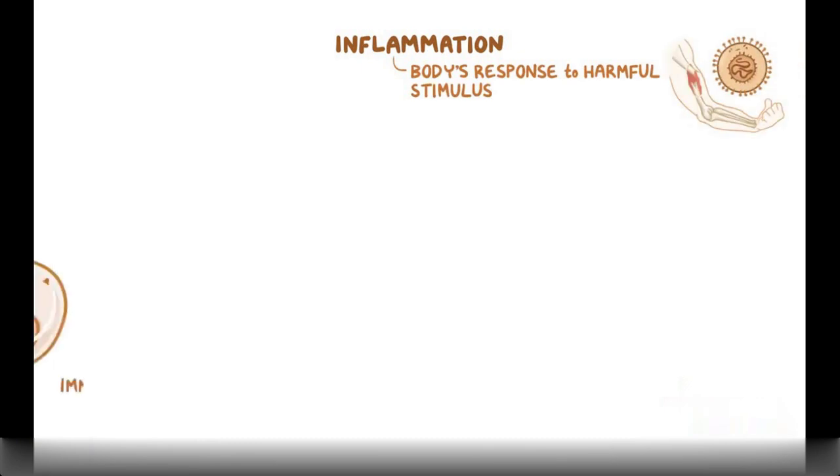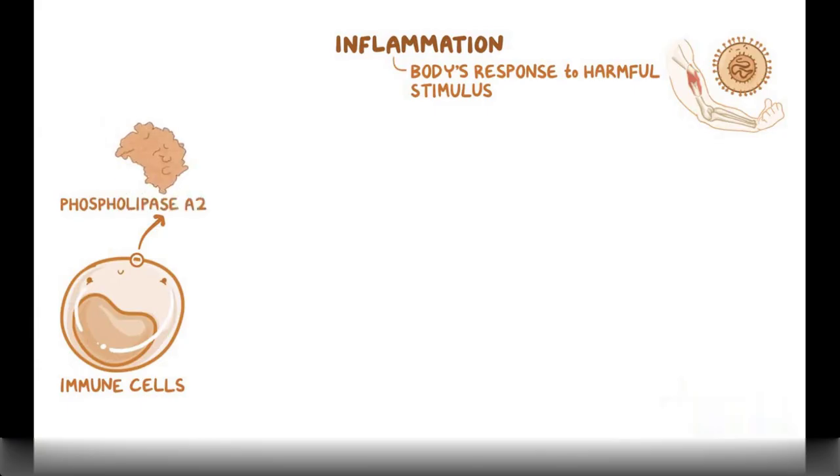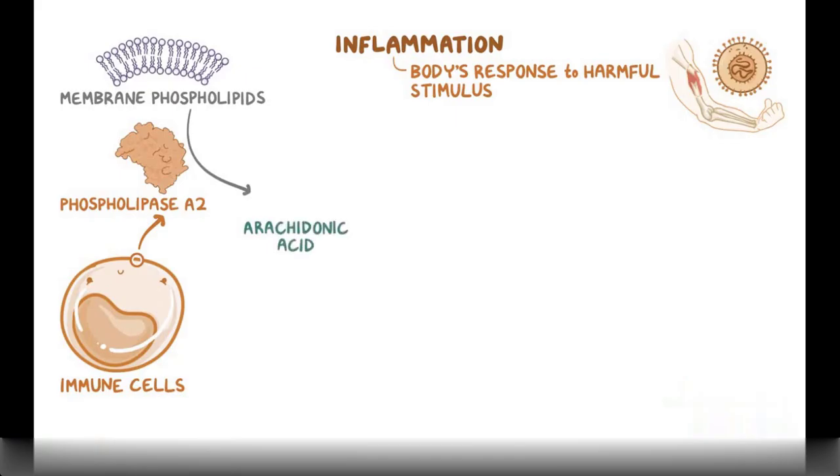During inflammation, your immune cells use an enzyme called phospholipase A2 to take membrane phospholipids and make a 20-carbon polyunsaturated fatty acid called arachidonic acid. Arachidonic acid is a substrate for an enzyme called cyclooxygenase, or COX.